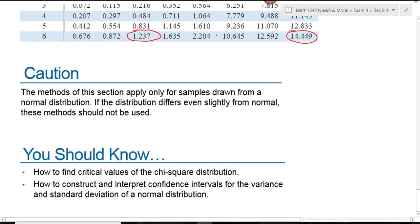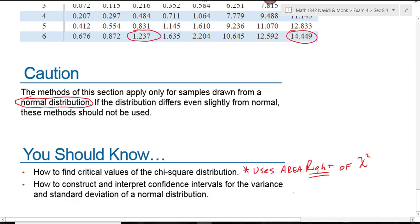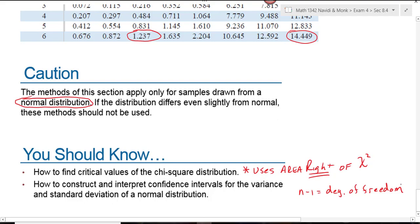One word of caution: this method only works if you know your sample is drawn from a population that is normally distributed. To use the chi-square distribution, we must follow strict adherence to the normal distribution rules. The chi-square distribution uses the area to the right — that's really the only major difference from the normal and t-distributions. Like the t-distribution, chi-square also has n minus 1 for its degrees of freedom. This wraps up section 8.4.